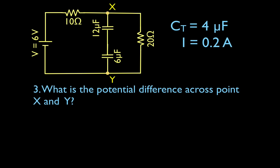Now we're going to find the potential difference across points X and Y. If we measure the potential difference from this point to this point — this branch and this branch are in parallel. The voltage across parallel branches in a circuit is the same. So if we can find the voltage across this branch, we'll know the voltage across the capacitor branch because it's the same thing.